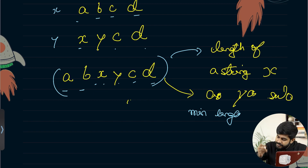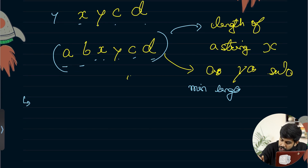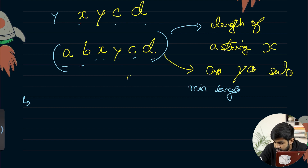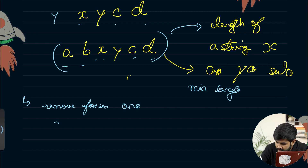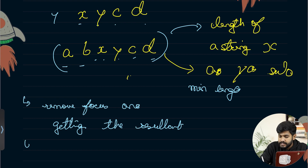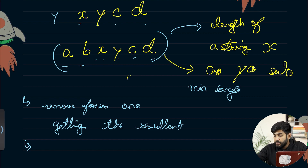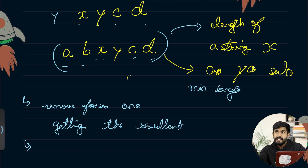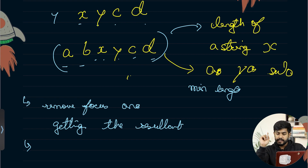The very first observation is that if only the length is asked, then we should remove our focus on making up the string. So remove focus on getting the resultant string. If only the length is asked, don't focus on getting the resultant value — focus on the length itself. This is the first observation.